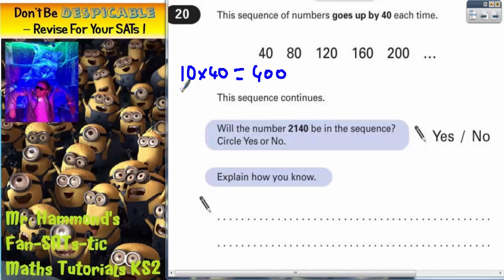And I know that 20 steps, if I keep adding on 40 20 times, that will be double what 10 lots is. So if 10 lots of 40 is 400, 20 lots of 40 will be double that, which will be 800.